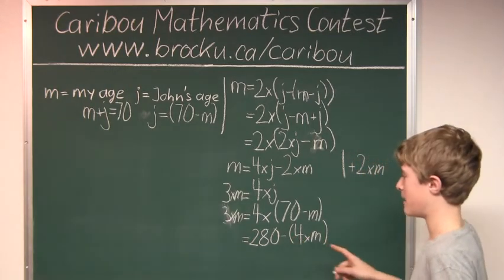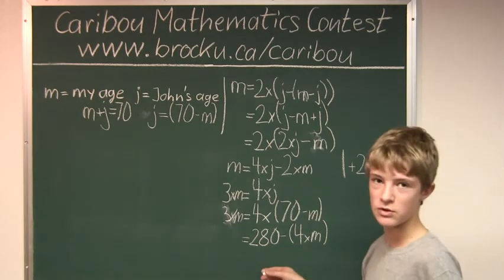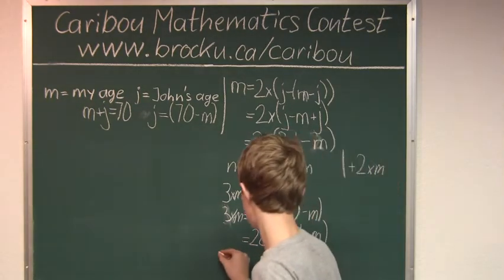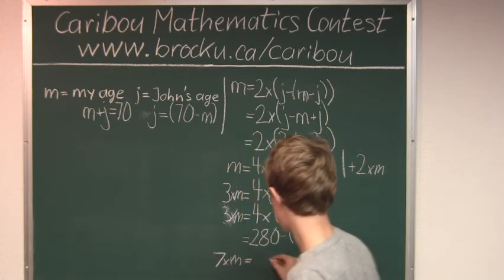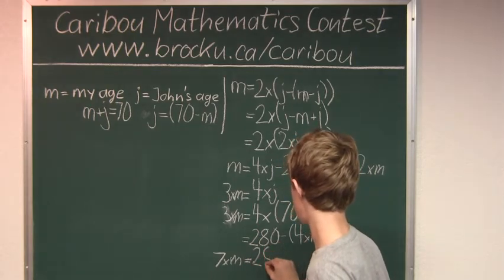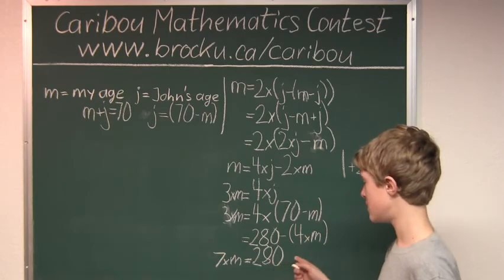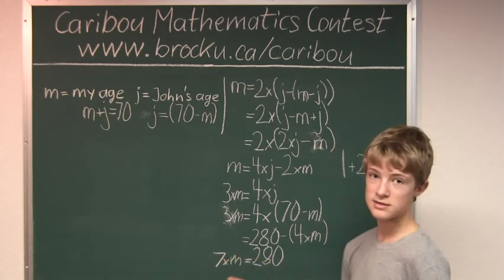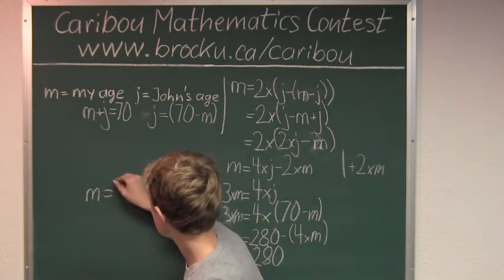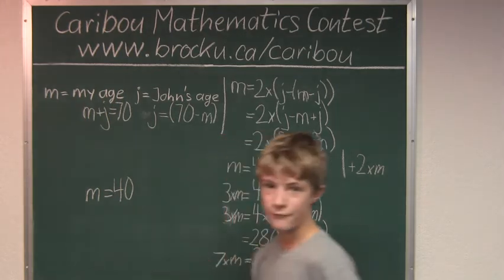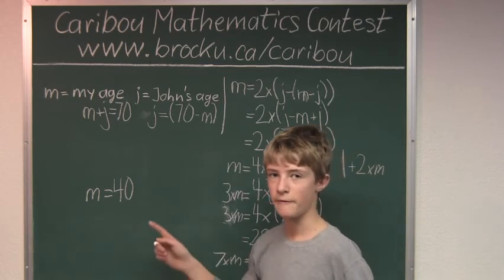Since we have 4 times m, and we have 3 times m here, that would be 7 times m equals 280. We would divide 280 by 7, and that would be 40. So, m equals 40. We would divide 280 by 7, and that would be 40.